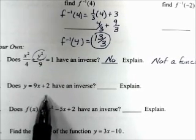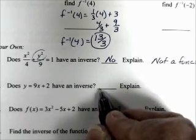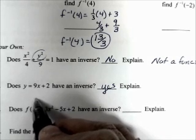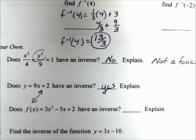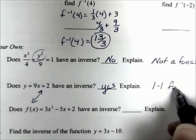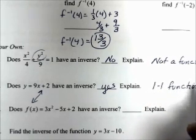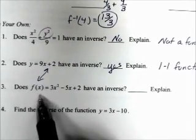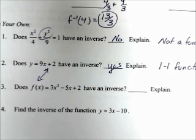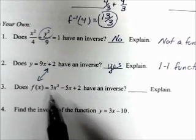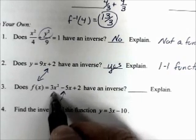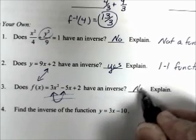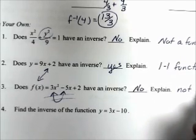Does y = 9x + 2 have an inverse? Yes — it's a line with slope 9, so it is a one-to-one function. Does f(x) = 3x² − 5x + 2 have an inverse? This is the graph of a parabola, which is not one-to-one. It is a function, yes, but it's not one-to-one, so no.